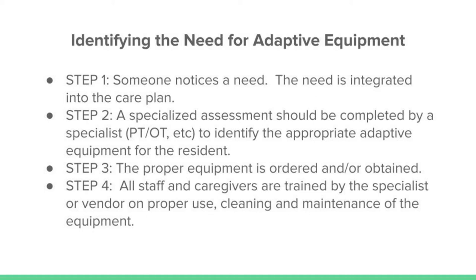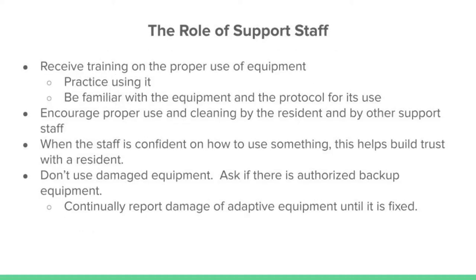Step one: someone needs to notice the need and integrate it into the resident's care plan. Step two: a specialized assessment should be completed by a specialist — ideally a physical or occupational therapist — to identify the appropriate adaptive equipment. Step three: the proper equipment is ordered or obtained. Step four: all staff and caregivers are trained by the specialist or vendor on proper use, cleaning, and maintenance. Staff should not use equipment they do not know how to use.